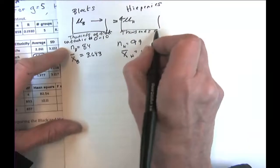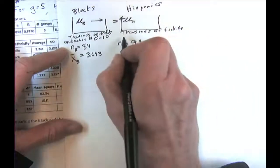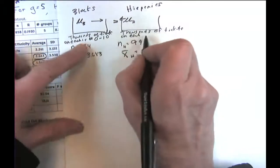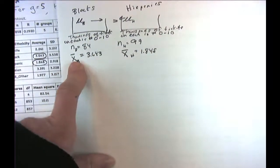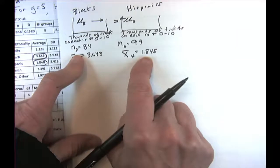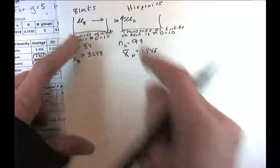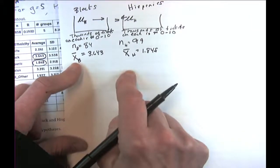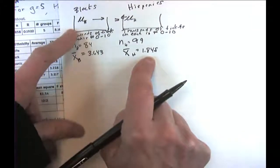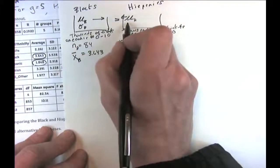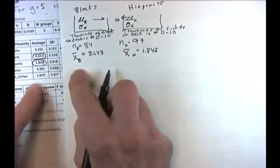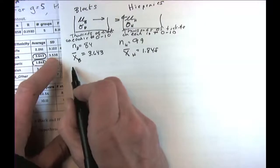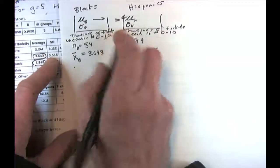We use a pooled estimate of SD, called SD-plus, which is based on all 858 minus 5 observations. This pooled SD comes out to 3.18. Instead of using each group's separate standard deviation, we put 3.18 in the numerator for both groups — they differ only in their sample sizes.